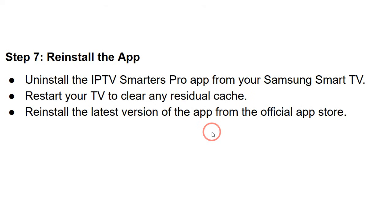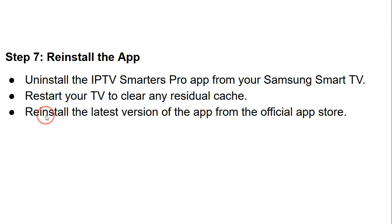The final step is to uninstall and then reinstall the app. Uninstall the IPTV Smarters Pro app from your smart TV and restart the TV to clear any residual caches. Then reinstall the latest version of the app from the official app store. I hope that trying all seven steps resolves the issue. If this video was helpful, please consider subscribing to the channel.